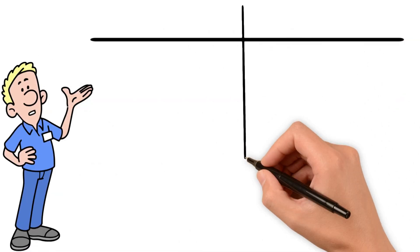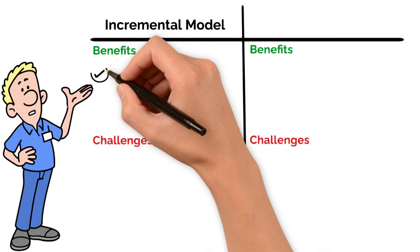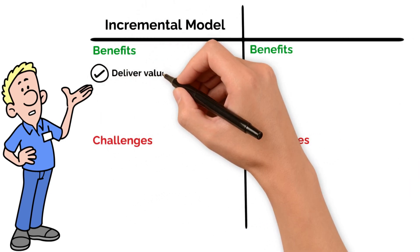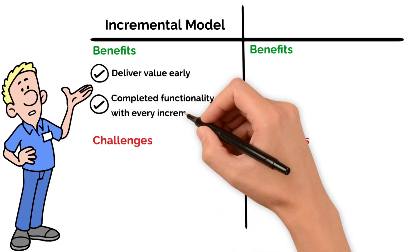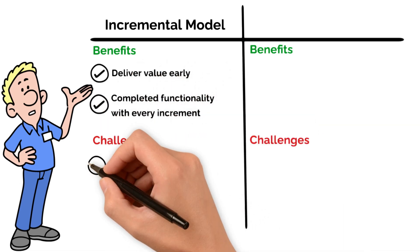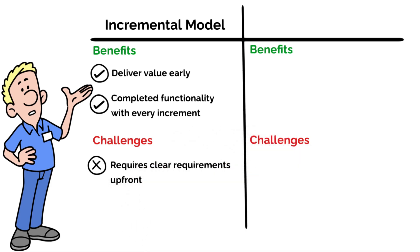Now, let's go over some benefits and challenges with each model. The incremental model shines in its ability to deliver value early. Stakeholders don't have to wait for the entire project to see results—they're getting completed functionality with every increment. But on the flip side, this model requires clear requirements up front for each increment to stay on track.